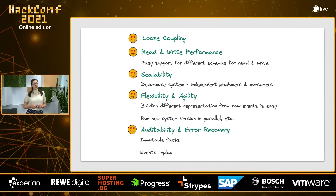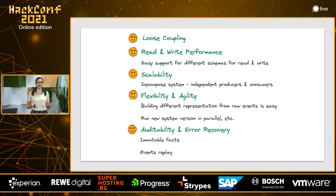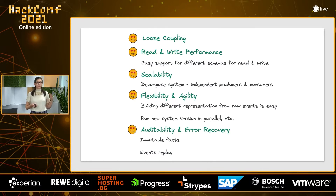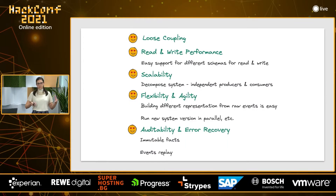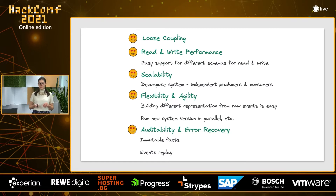To finish up with this section, let's quickly summarize the advantages of introducing event streams. First is loose coupling: we now have the freedom to separate the model we use for reading from the model we use for writing our data. This naturally leads to the next advantage, which is read and write performance together, because now we can use different schemas for reading and writing. Also scalability: event streams are a very simple abstraction and they are great for scalability. They can help you to decompose your system into independent producers and consumers so that you can scale those pieces independently from one another.